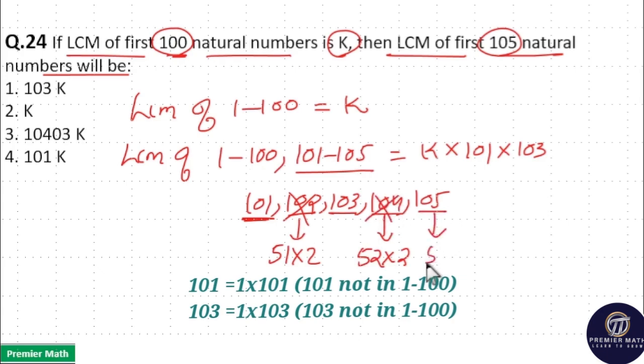Now 105 means 5 times 21 is 105. This 5 and 21 are included in 1 to 100, so leave it.